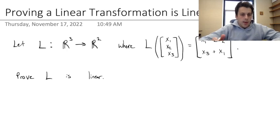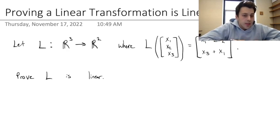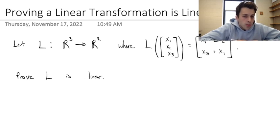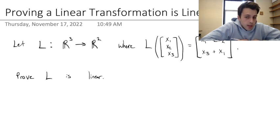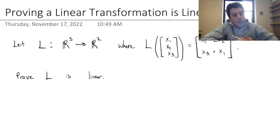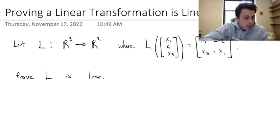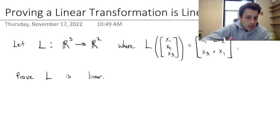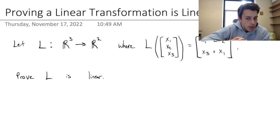In this video, I'd like to do an example where we prove that a linear transformation is linear. We are given this linear transformation L, which takes something from R3 and transforms this vector space into R2. It gives us a definition where you plug in the vector x1, x2, and x3, and it outputs a vector in R2, where the first coordinate is x1 minus 2x2, and the second coordinate is x3 plus x1.